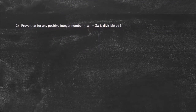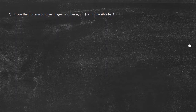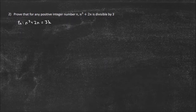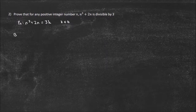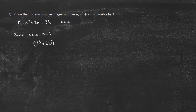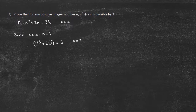For this example, prove that for any positive integer n, n cubed plus 2n is divisible by 3. I want to show that n cubed plus 2n can be written as 3 times some integer k — that's just another way to write divisibility by 3. Starting with the base case for n equals 1: 1 cubed plus 2 times 1 equals 3, so k equals 1. It is divisible by 3, so the base case is true.